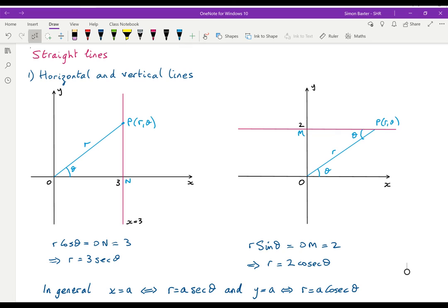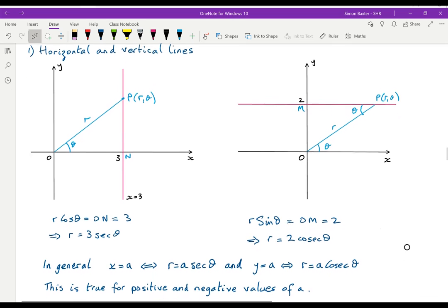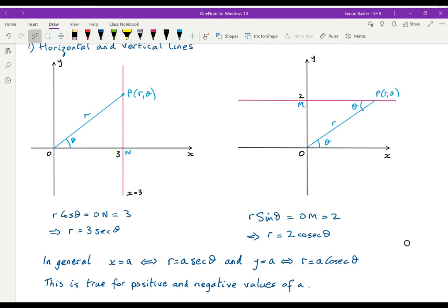And in general, x equals a in Cartesian form is the line r equals a sec theta in polar form. And y equals a is r equals a cosec theta. This also works, is true for positive and negative values of a.